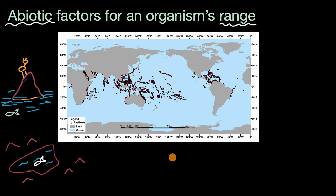We aren't done talking about all the factors for an organism's range — we just touched on the abiotic factors in this video. But you could imagine there are also biotic ones, like access to food or other organisms that might view you as food.